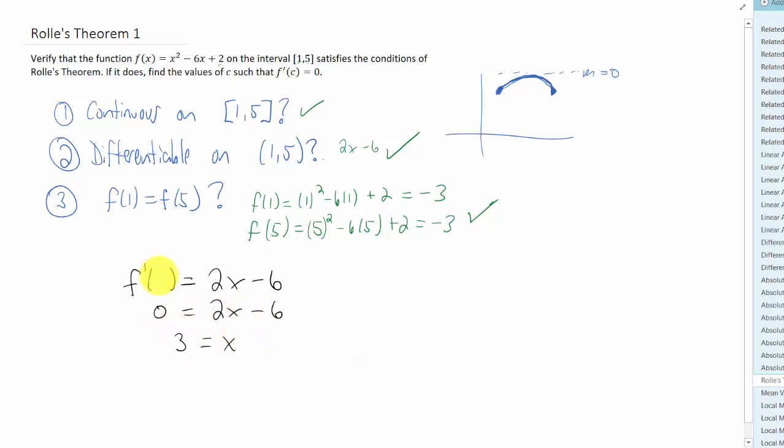Of course, if we wanted to be a little bit more technical about this, maybe we would have said f prime of c and used c as our variable here. And since the original question asked us to find a value of c such that f prime of c equals zero, maybe this is a better answer than saying x. That does it for this problem. We're going to extend this concept to the mean value theorem next.